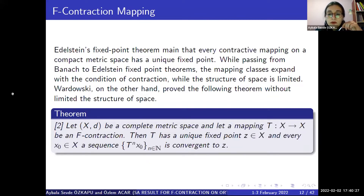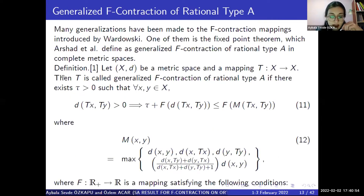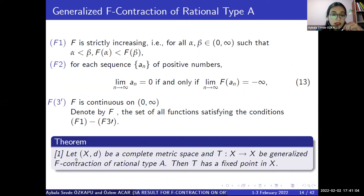Ederstein's fixed-point theorem states that every contractive mapping on a compact metric space has a unique fixed point. While passing from Banach to Ederstein's fixed-point theorem, the mapping classes expand with the contraction condition while the structure of the space is limited. Wardowski, on the other hand, proved the following theorem without limiting the structure of space: let (X, d) be a complete metric space and T: X → X be an F-contraction. Then T has a unique fixed-point Z in X, and for every X₀ in X, the sequence T^n(X₀) converges to Z. One generalization of F-contraction mappings is given by Arshad et al. Let (X, d) be a complete metric space and T: X → X be a generalized F-contraction of rational type A. Then T has a fixed-point in X.